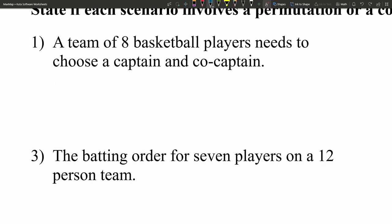Number 1 states that a team of 8 basketball players needs to choose a captain and a co-captain. Well, think if we had 8 separate players and we chose Jamie and Danny — Jamie being captain is different from Jamie being co-captain. So the order in which they're assigned matters. It's choosing a captain and a co-captain, two very specific and different roles. Therefore, the order does matter, making this a permutation.